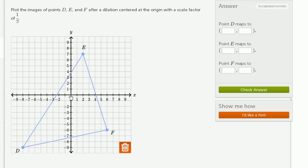So we're going to center around the origin and scale this thing down by 1/2. One way to think about it is the points that will correspond to points D, E, and F are going to be half as far away from the origin, because our scale factor is 1/2, in either direction.